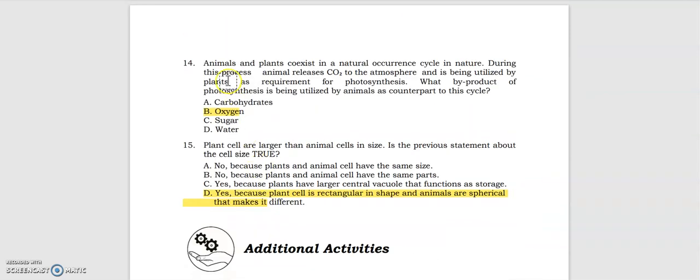Number 14: animals and plants coexist in natural occurrence cycle in nature. So what byproduct of photosynthesis is being utilized by animals as counterpart to this cycle? The answer is oxygen. Number 15: plant cells are larger than animal cells in size. Is the previous statement about the cell size true? The answer is yes, because plant cell is rectangular in shape and animals are spherical, that makes it different.